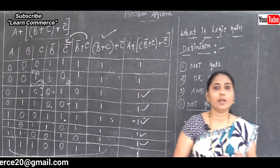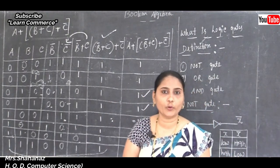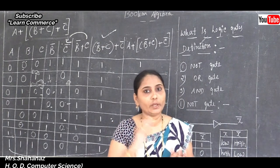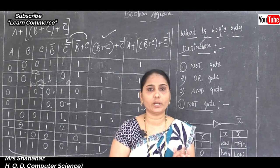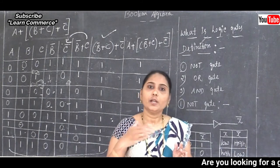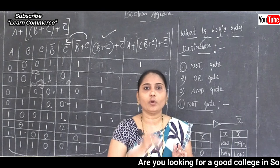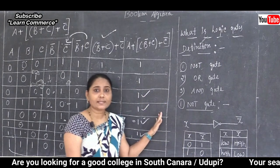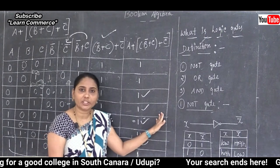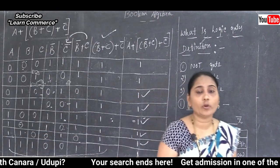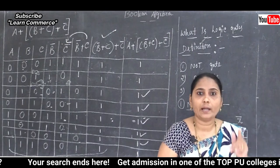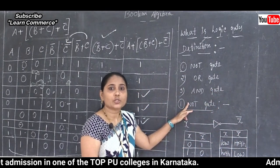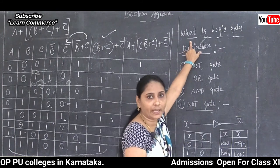In logic gates, there are three types: NOT gate (one input, one output), OR gate (two or more inputs, one output), and AND gate (two or more inputs, one output). A logic gate operates on one or more input signals and always produces only one output signal.